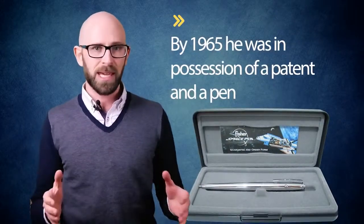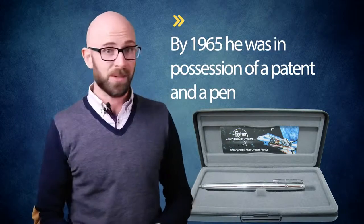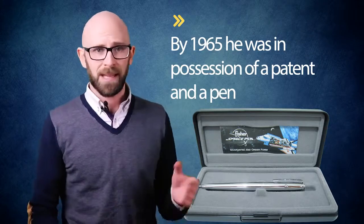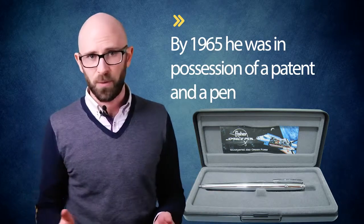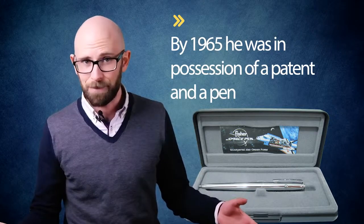by 1965 he was in possession of a patent and a pen that could work upside down, underwater, at temperatures from minus 50 to 400 degrees Fahrenheit and even, you guessed it, in space. When Fisher brought his AG-7 pen to the attention of NASA, they tested it thoroughly, then thanked Fisher by buying 400 pens from him.